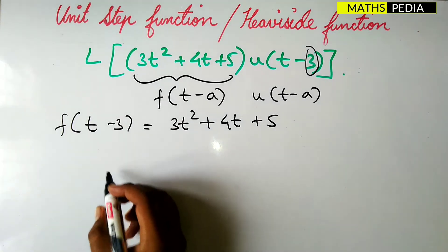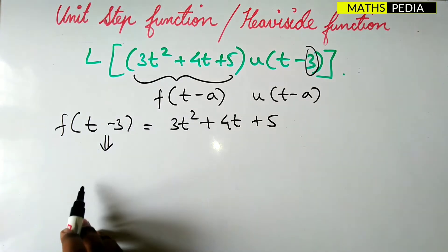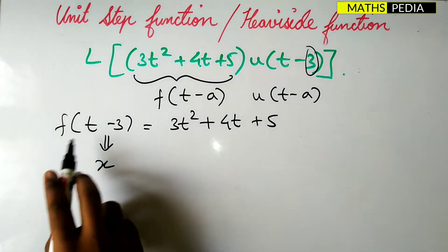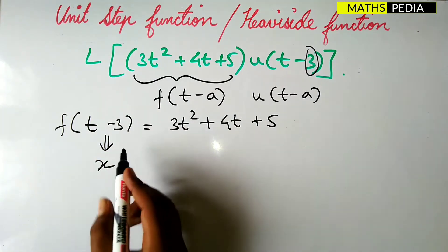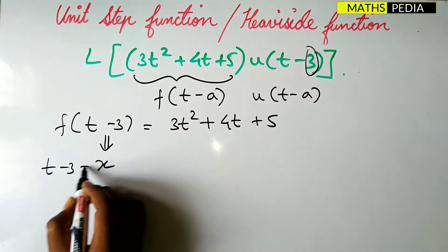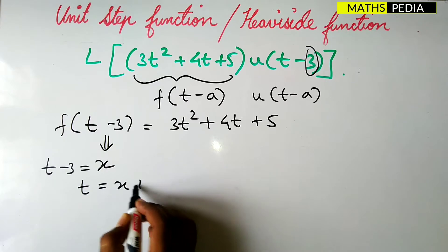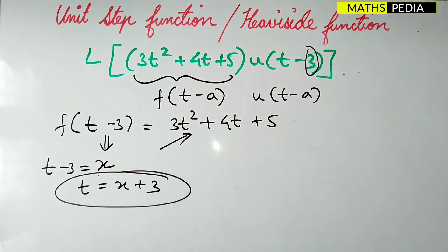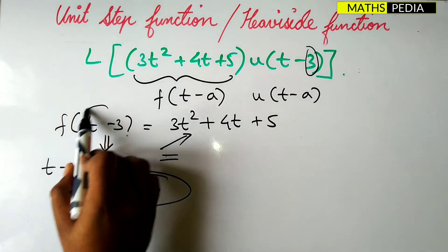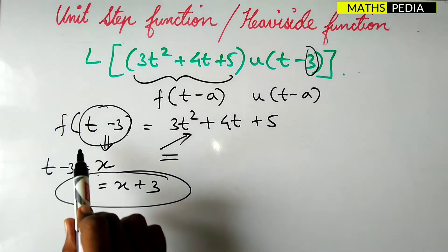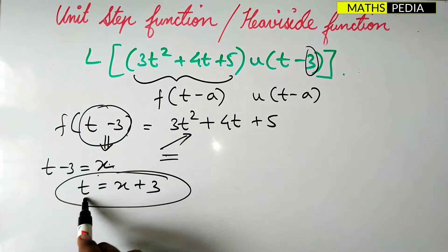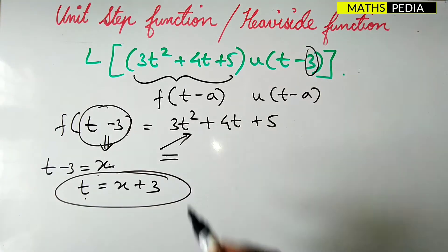The next step is to substitute t-a with another variable. Let t-3 = x, so t = x + 3. We then replace t with (x + 3) in the expression. That means we substitute t = x + 3 into f(t-3), which gives us f(x) in terms of x.